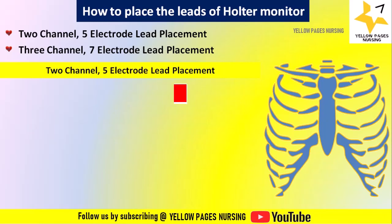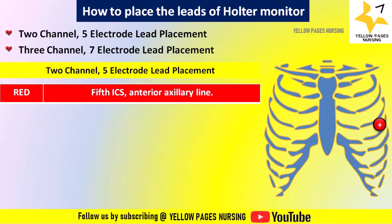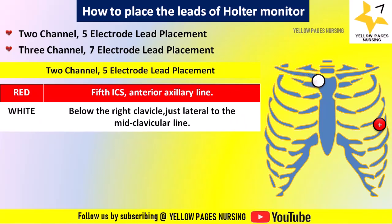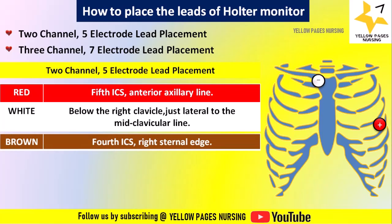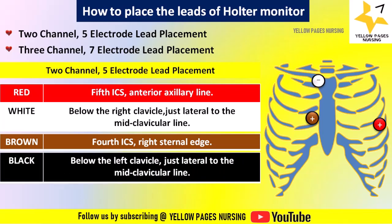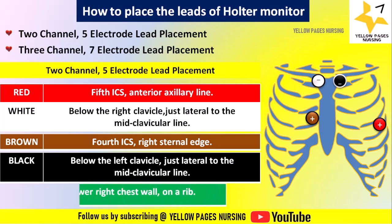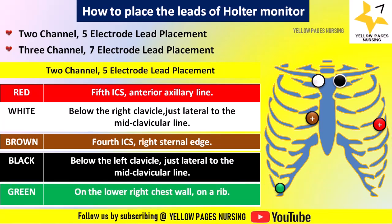For 2-channel 5-electrode lead placement: the red lead is placed over the 5th intercostal space at the anterior axillary line; the white lead is placed below the right clavicle, just lateral to the mid-clavicular line; the brown lead is placed on the 4th intercostal space at the right sternal edge; the black lead is placed below the left clavicle, just lateral to the mid-clavicular line; and the green lead is placed on the lower right chest wall on a rib. In this configuration, 2 channels of ECG data are bipolar: red (positive) referenced to white (negative), and white (positive) referenced to black (negative).